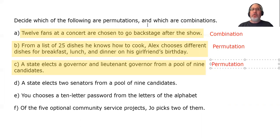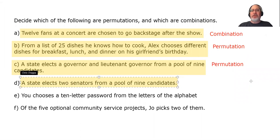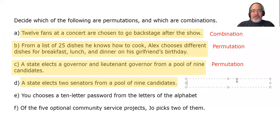A state elects two senators from a pool of nine candidates. What do you think? Does it matter what order I point to two people in? For example, if I point to Bart first and then Lisa second, is that the same as pointing to Lisa first and then Bart second? It is the same because the order doesn't matter. Both end up being senators. So since the order doesn't matter, this is a combination.